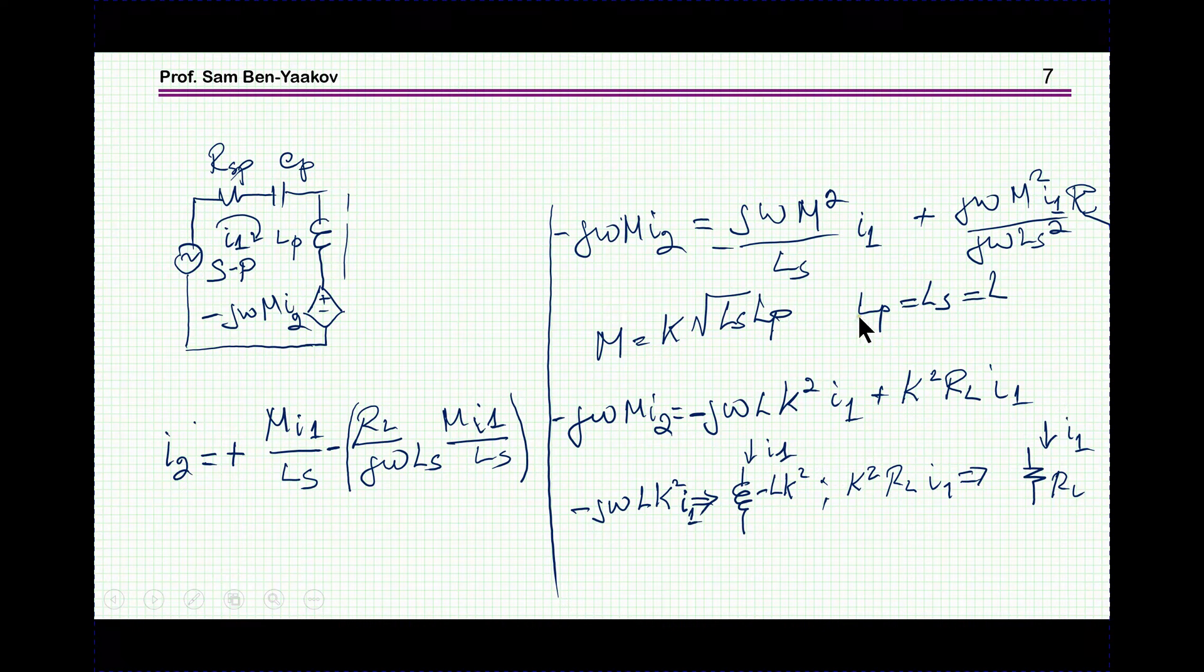Assuming again that these inductors are equal, without losing any generality, just making the expressions simple, I'm getting the j omega M I2, which is this voltage source, is equal to j omega L K square I1. There is an expression here times I1, and then there is another expression, which is a real one times I1, too. Now, this actually can be translated into an inductor, which is fed by I1. So I can put here an inductor that is fed by I1. The value of the inductor would be minus L K square, and so this representation is equal to this expression here.